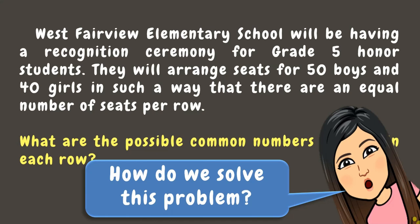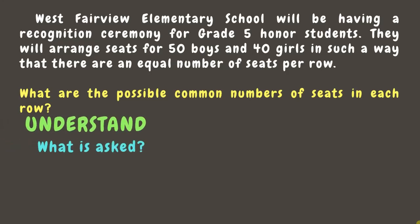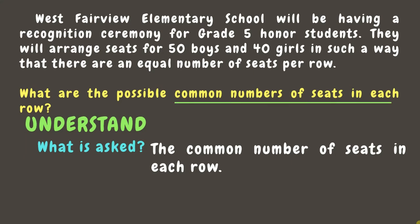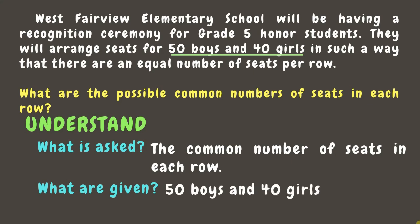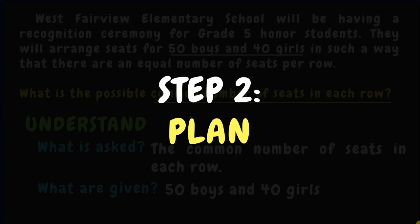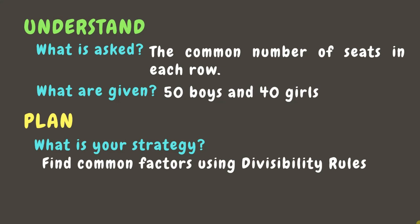We can use the four-step method to solve this problem. Step 1: Understand. We need to identify the possible common numbers of seats in each row. The given data is 50 boys and 40 girls. Since we need to find the common numbers of seats for 50 boys and 40 girls, we should find the common factors of 50 and 40. We can use the divisibility rules to find these common factors.